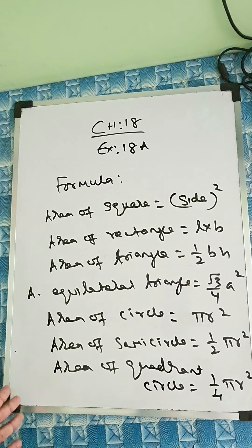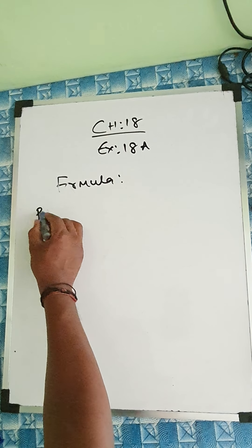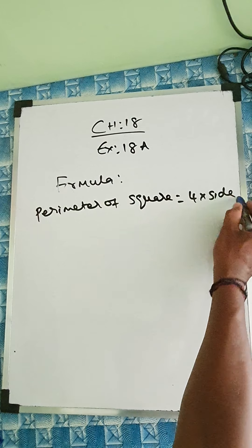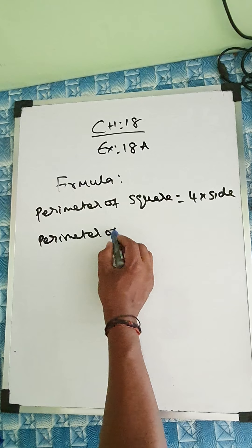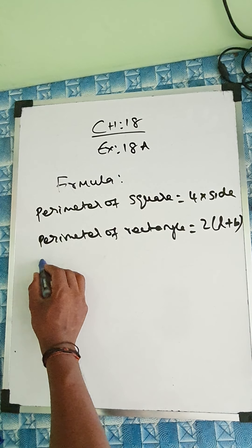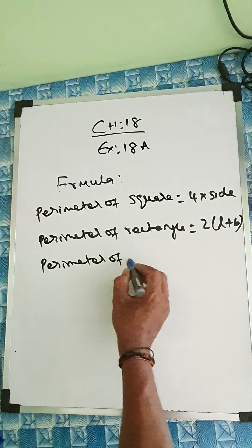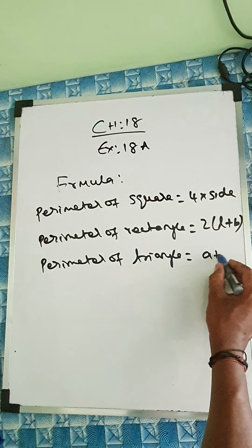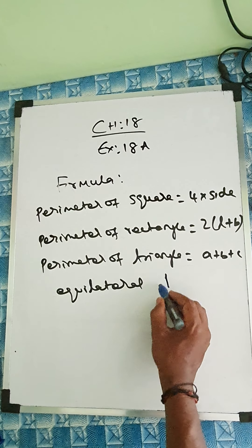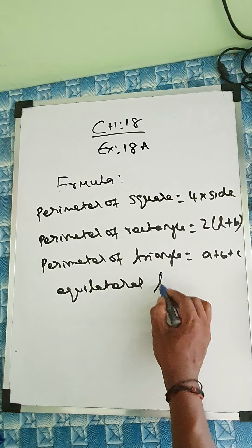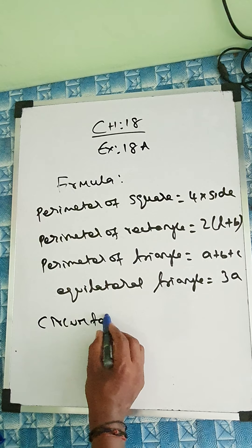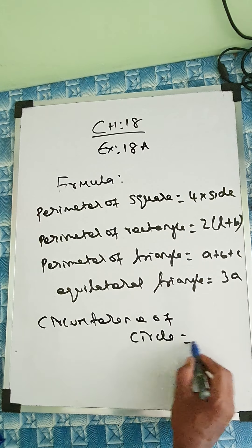If any other formula is needed, I'll give it when we do the question. Now the perimeter formulas: perimeter of square is 4 into side, and perimeter of rectangle is 2(L+B). Perimeter of triangle is A plus B plus C; if it's an equilateral triangle, it's 3A — meaning 3 into side. Circumference of a circle is 2 pi R.